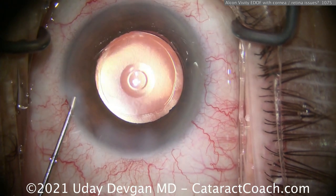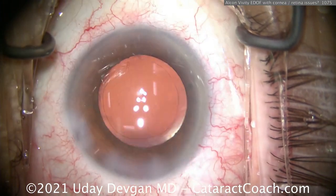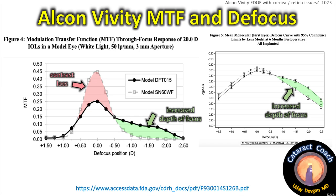If we look at the actual FDA trial data, you can see from this curve that the extended depth of focus is shown in the green area, and it certainly does increase that range. But look at the red area — that's the contrast loss. When you see this MTF, this modulation transfer function graph, you can see that yes, the patient definitely gets an increased depth of focus, but there is also significant contrast loss.